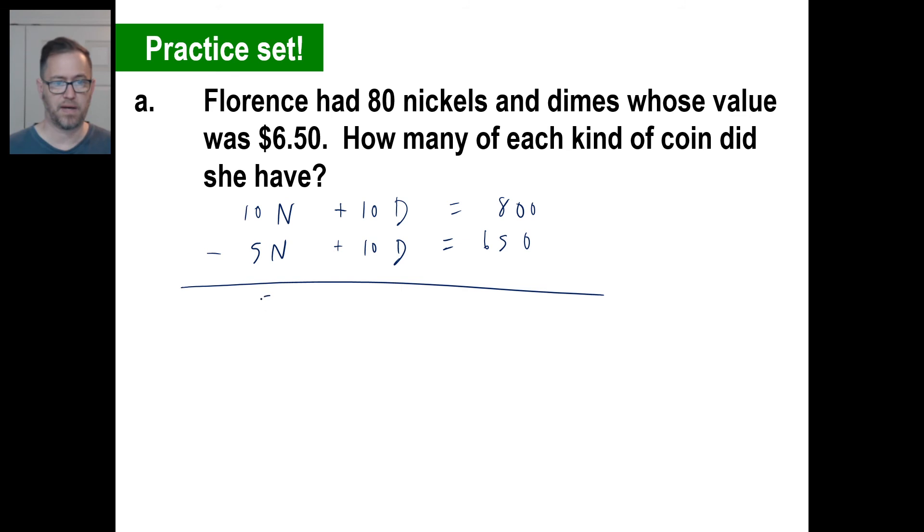That is going to give me five times N. Those are gone. 800 minus 650 is 150. So five times the number of nickels, five into 150. That'll be 30. So there are 30 nickels. If there were 30 nickels and Florence had 80 nickels and dimes total, then the number of dimes she has has to be 50, right?